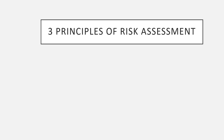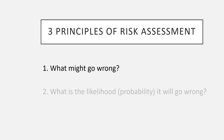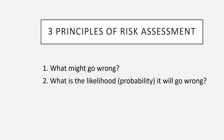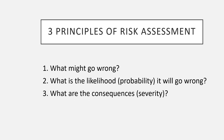The guideline describes three basic principles of risk management: What might go wrong? What is the likelihood — the probability — it will go wrong? And what are the consequences — the severity? These questions address how frequently something can happen and what the serious consequences of the outcome might be. These questions are asked throughout the entire risk assessment process.